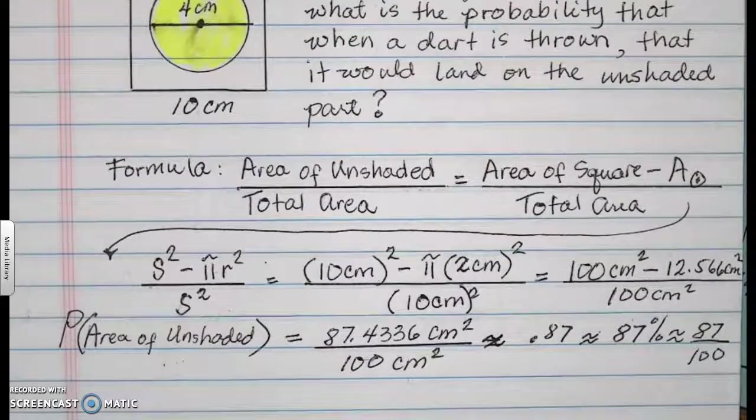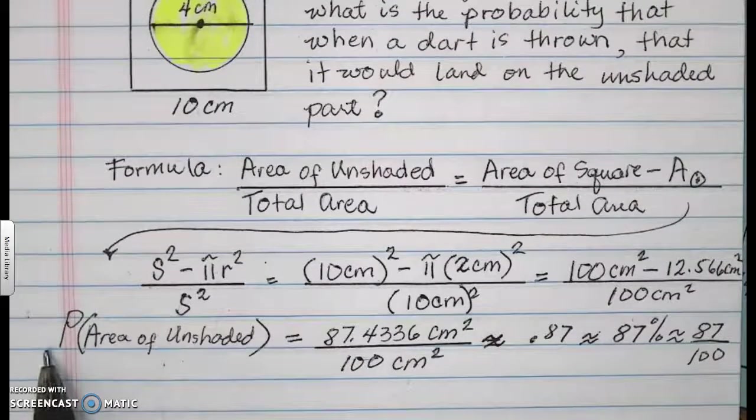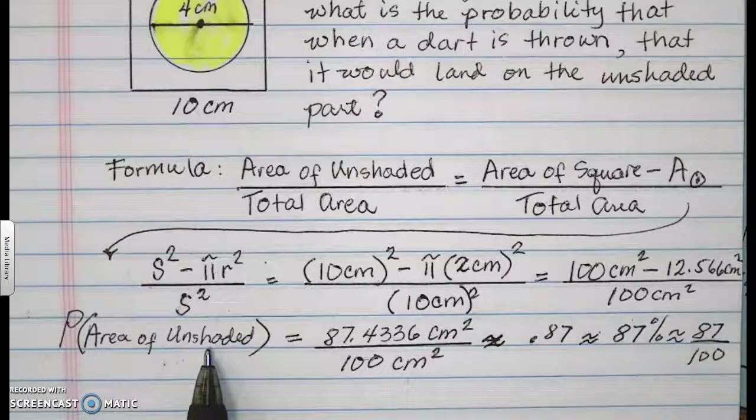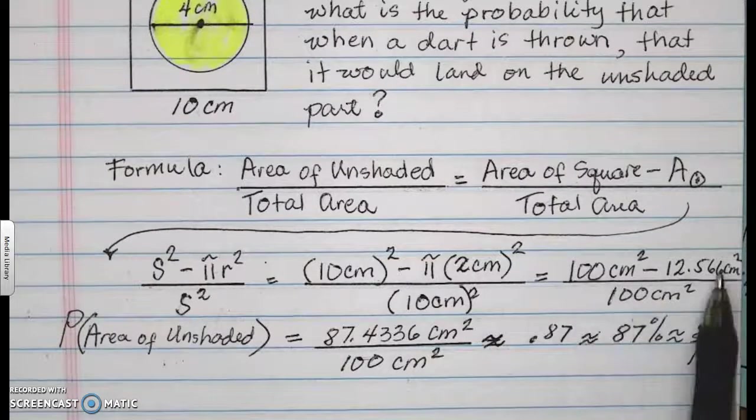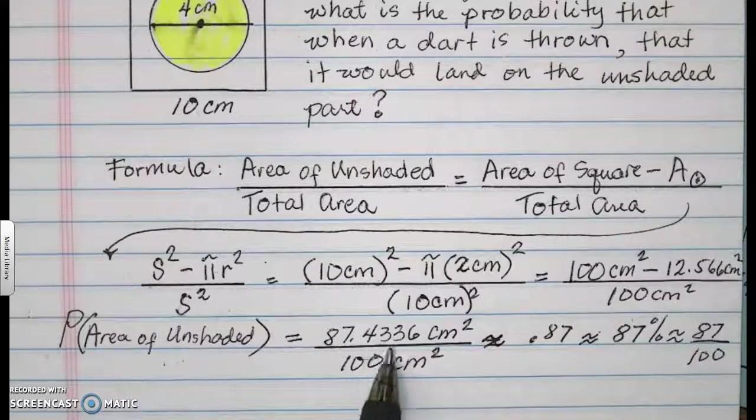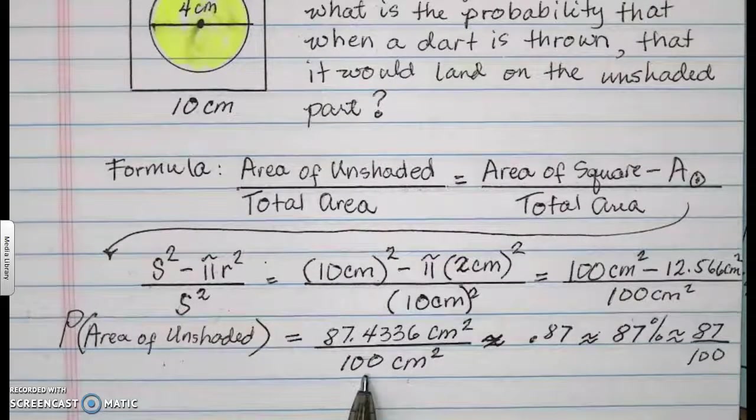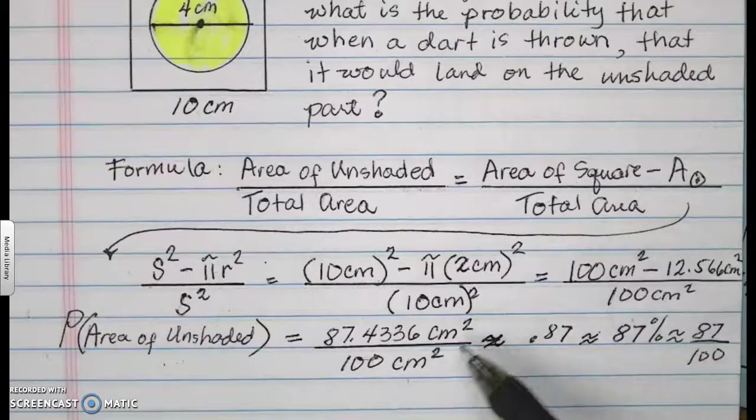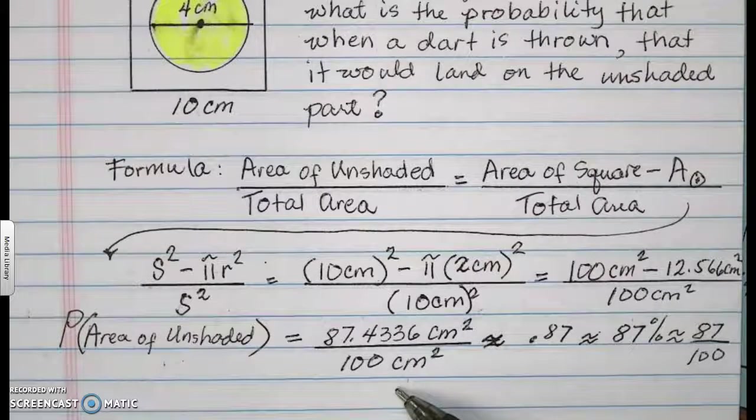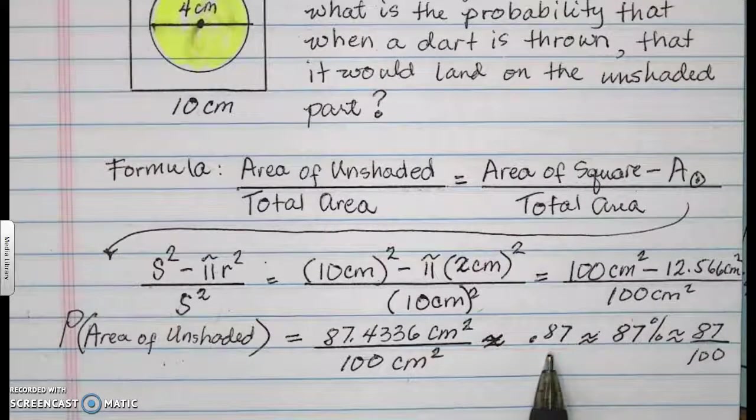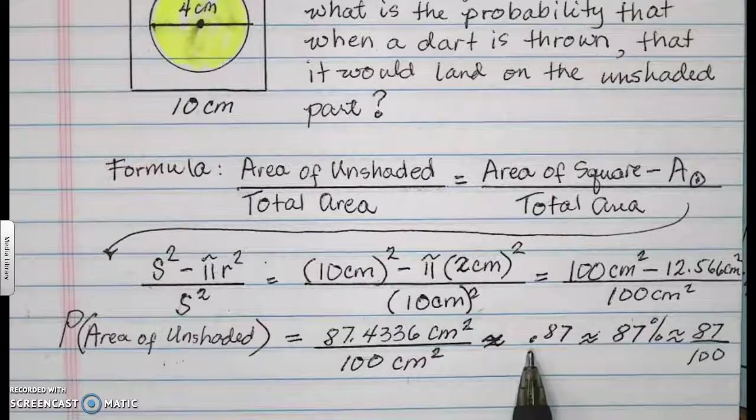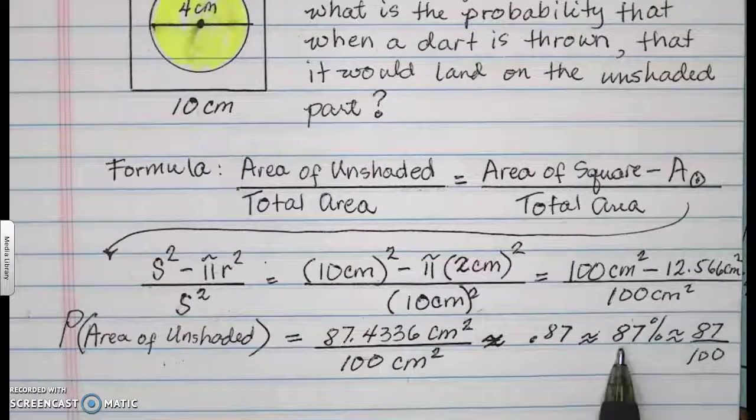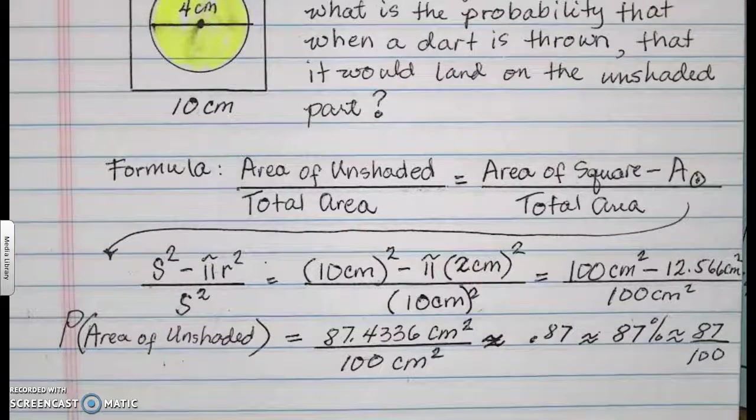Now to finalize this example, the probability that your dart is going to land on the area of the unshaded part of the figure is equal to 87.4336 cm² all over the overall total area, which is 100 cm². Your centimeters squared are going to cancel out. Therefore, your final answer will be approximately 0.87, or the probability of the dart landing on the unshaded part is going to be 87% or approximately 87 over 100.